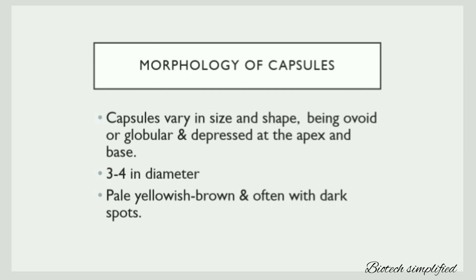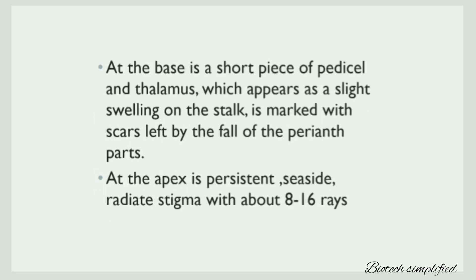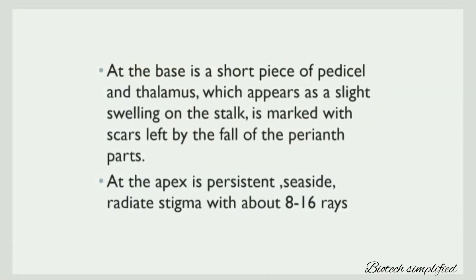The diameter of these capsules is 3 to 4 cm. They are pale yellow to brown in color and often have dark spots. At the base there is a pedicel and a thalamus, which appears as a slight swelling on the stalk.